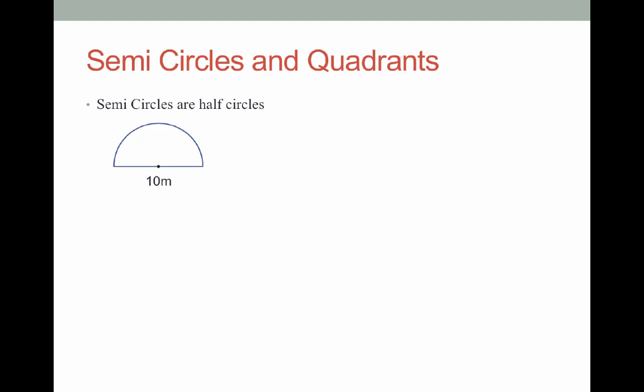Semicircles are just half circles. Here I've got a picture of a half circle, and it has a diameter of 10 meters. Now, if this was an entire whole circle, the formula would be C equals pi D, or pi times the diameter.